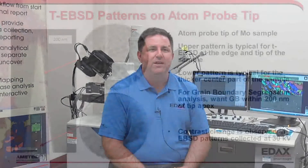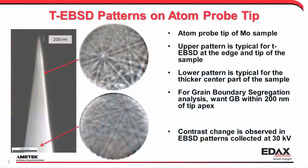Because this process occurs in situ within the FIB, the risk associated with transferring a sample to TEM is removed and significant time savings are obtained for users. The shape of atom probe specimens provides unique challenges for characterization, and Atom Probe Assist provides tools to resolve them.